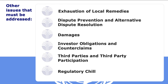The Working Group has also agreed on a bucket of other issues or cross-cutting concerns to be addressed in the context of reform solutions. These include exhaustion of local remedies, dispute prevention, alternative dispute resolution, investor obligations and counterclaims, damages, regulatory chill, and third parties and third-party participation. The Working Group is tackling these, but with varying degrees of focus and priority. The extent to which these issues have or have not been given priority in the sessions, the work plan, and intersessionals has been a source of concern and contention.